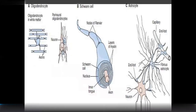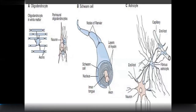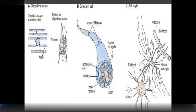Oligodendrocytes are found in the central nervous system and wrap around axons. They are analogous to insulated copper wires bundled together. In the peripheral nervous system, Schwann cells form the myelin sheath instead of oligodendrocytes.